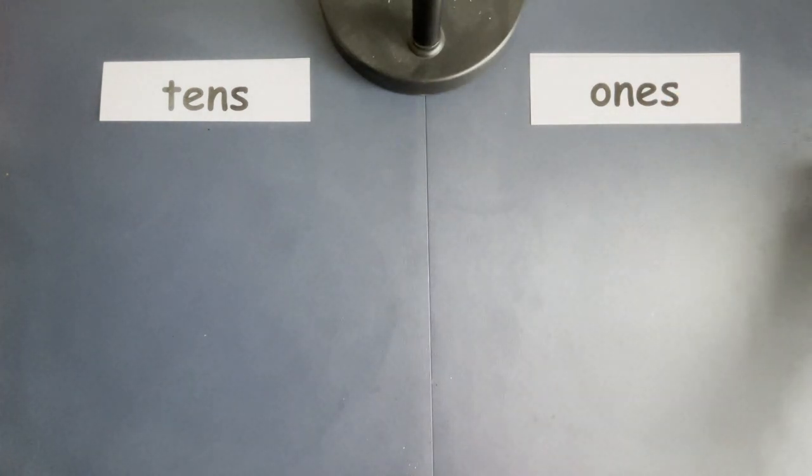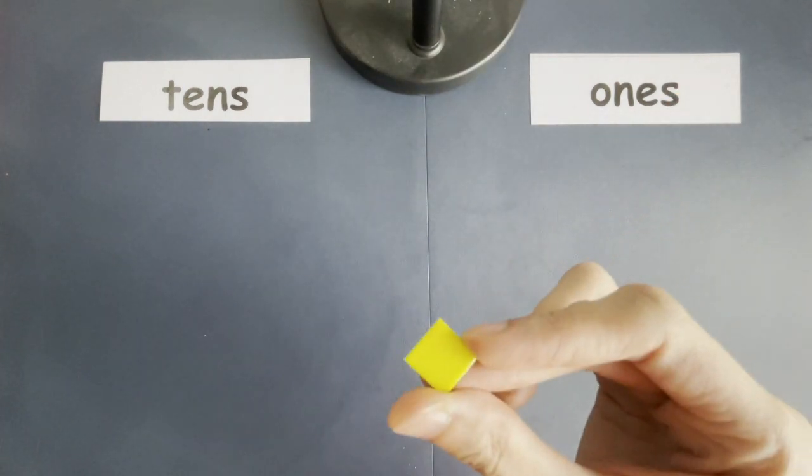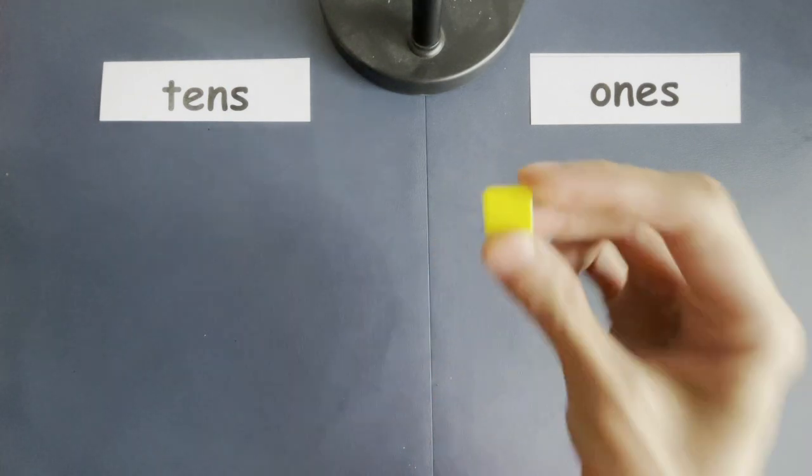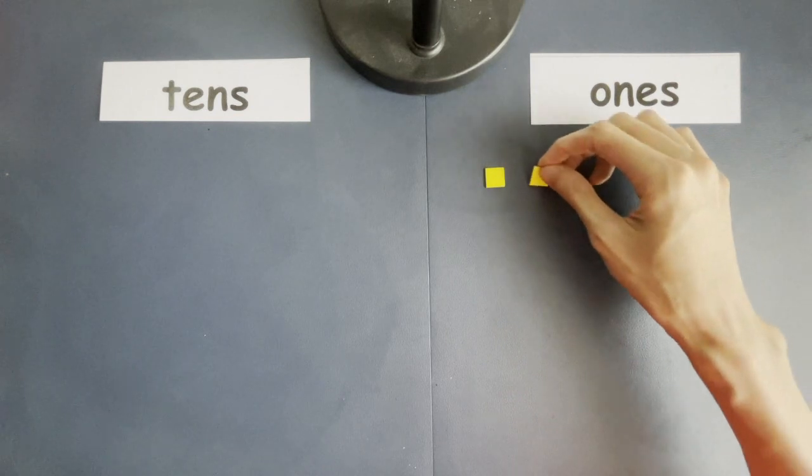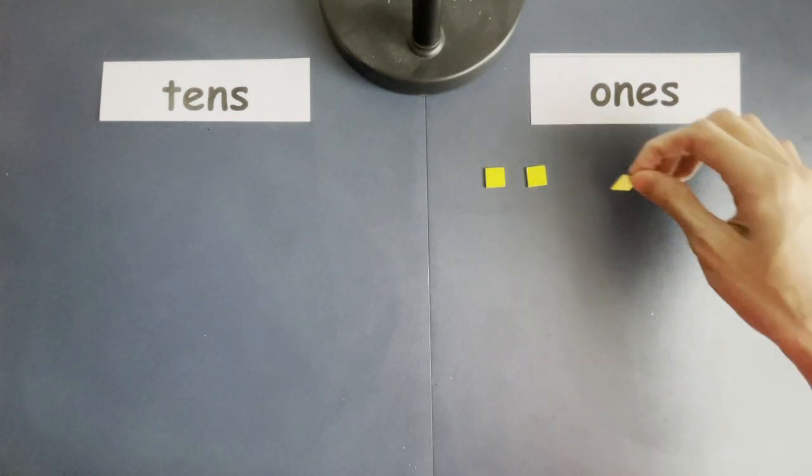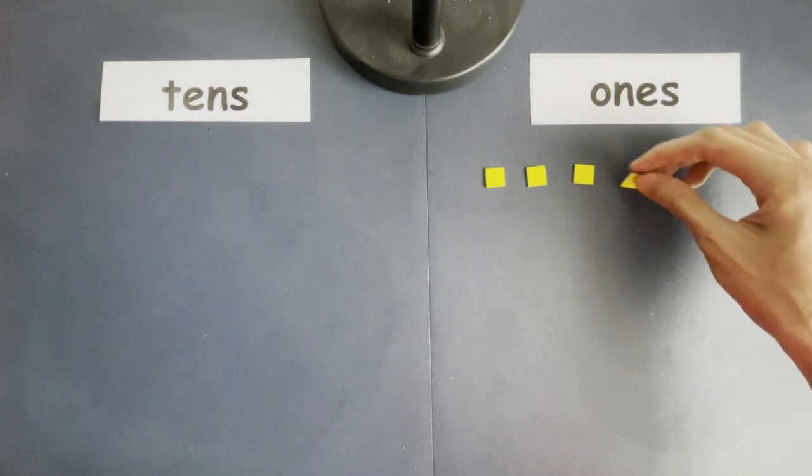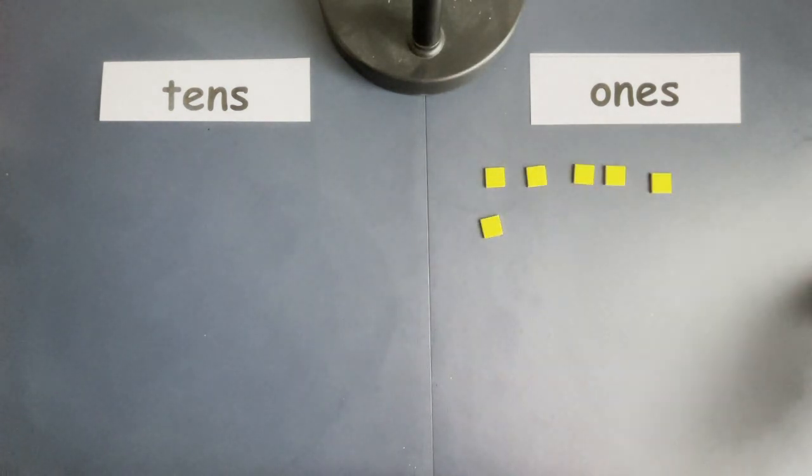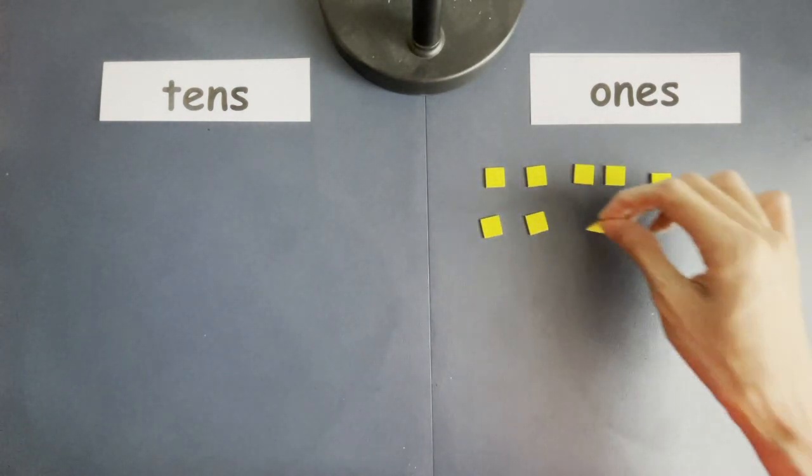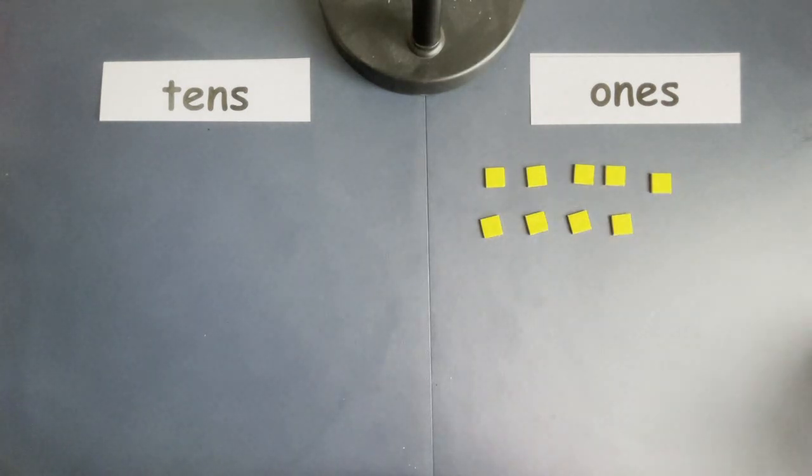Let's start with ones. This is a one. Let's call it a one. I'm going to put it over here. So, there's one one, two ones, three ones, four ones, five ones, six ones, seven ones, eight ones, nine ones, and ten ones.